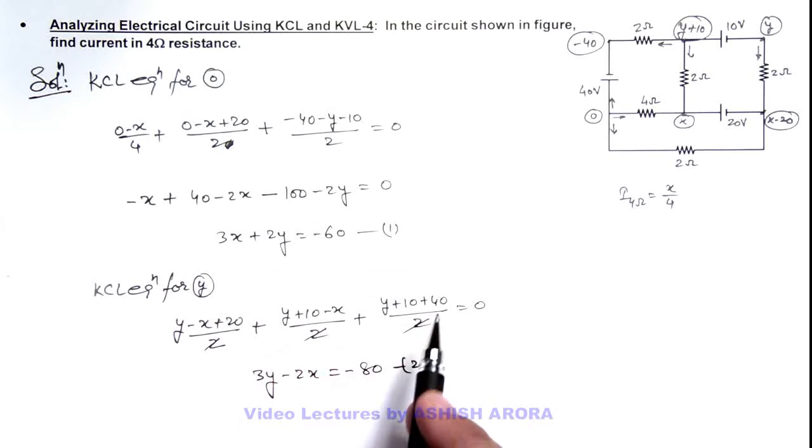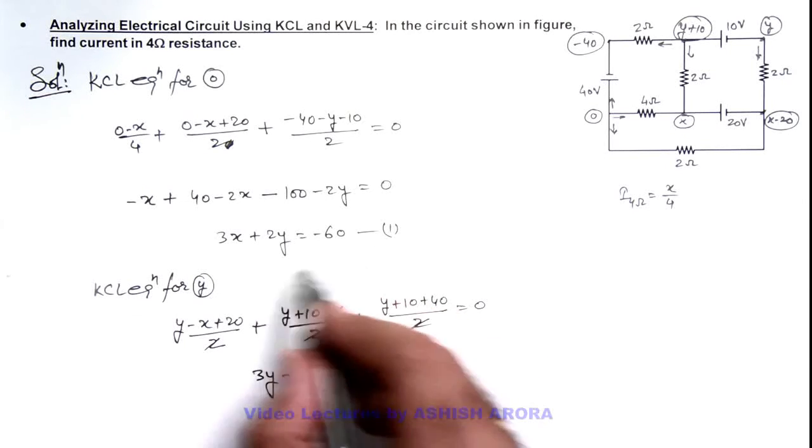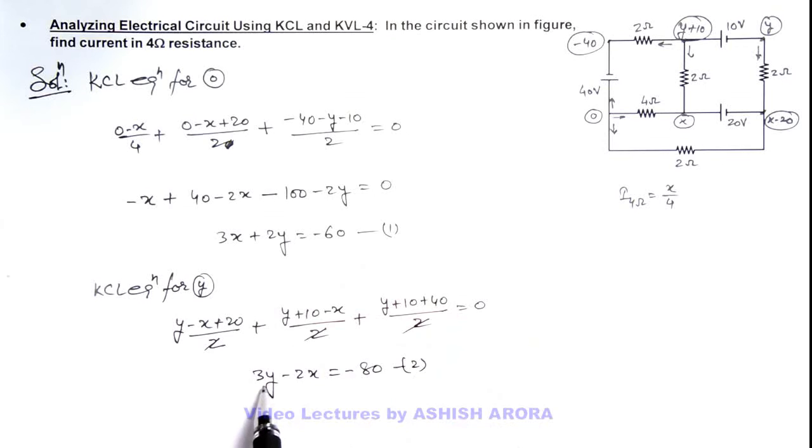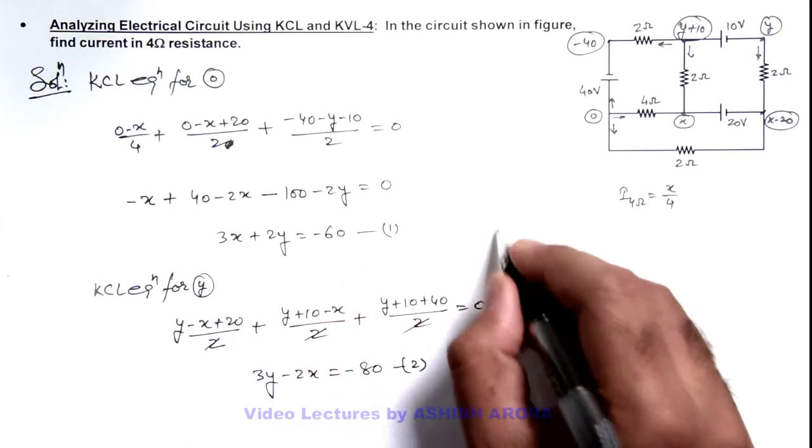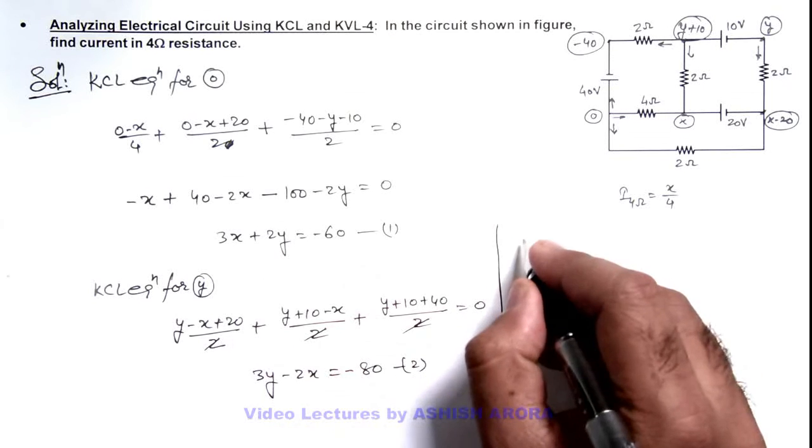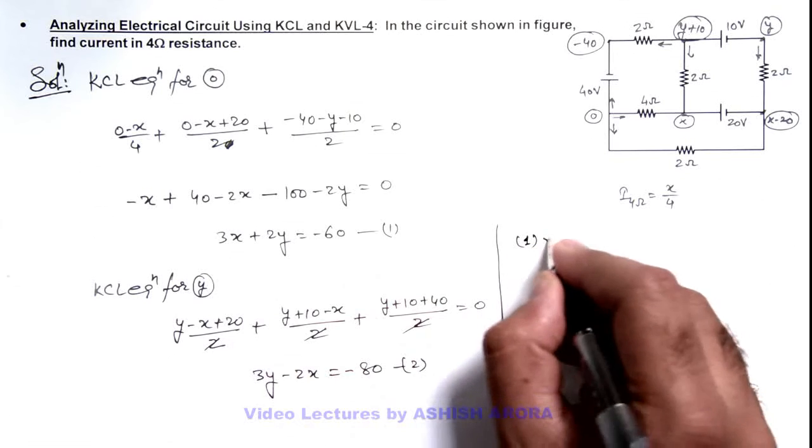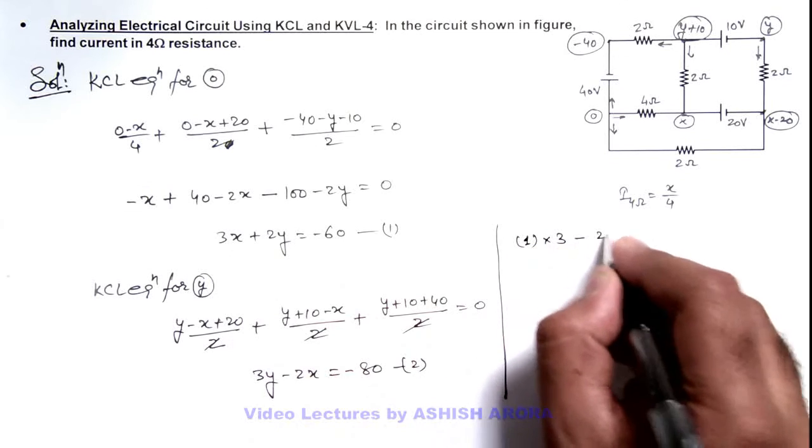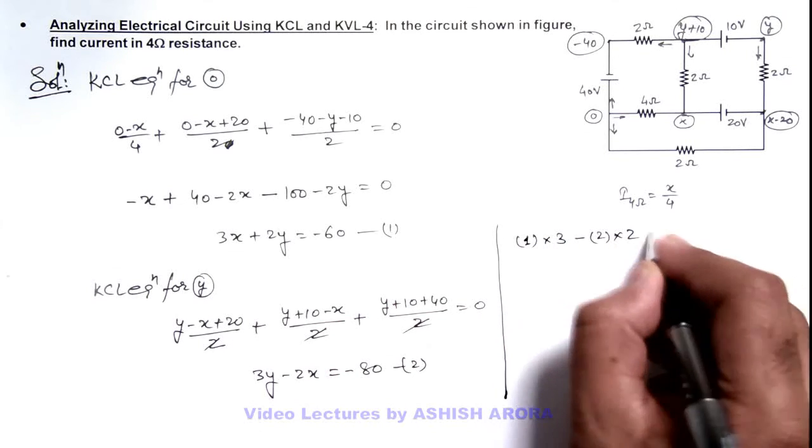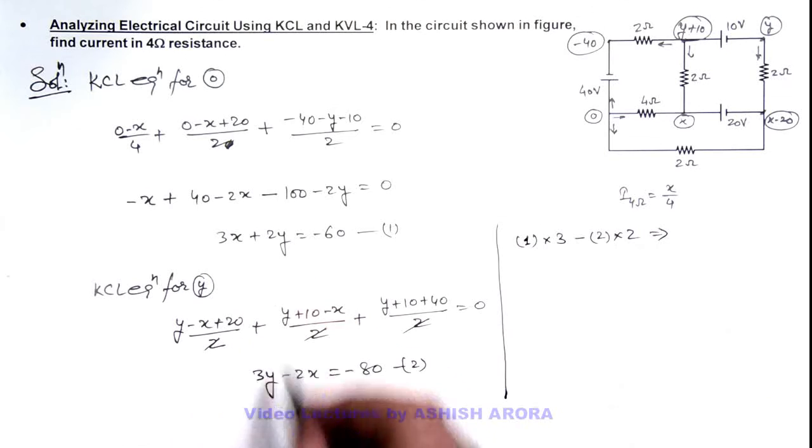And if I wish to get the value of x, I can multiply equation 1 by 3 and equation 2 by 2, and we subtract the two. So here we can further write equation 1 multiplied by 3 minus equation 2 multiplied by 2, and this will result in y getting cancelled out.